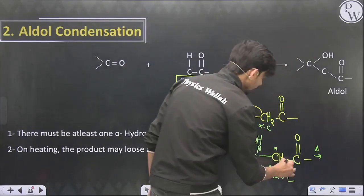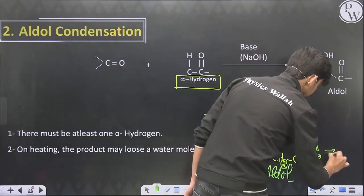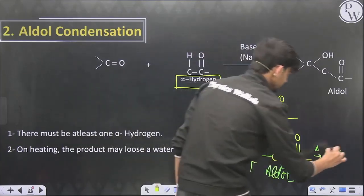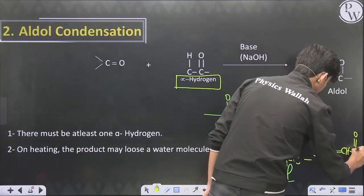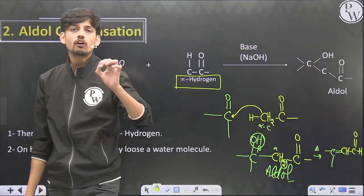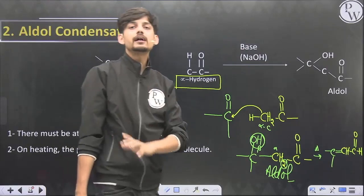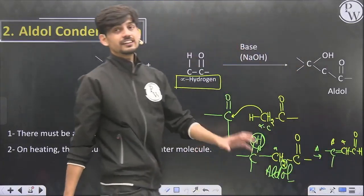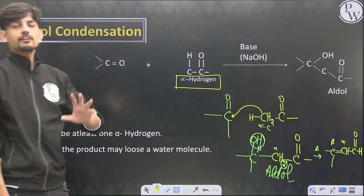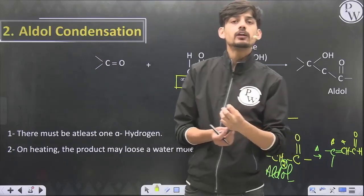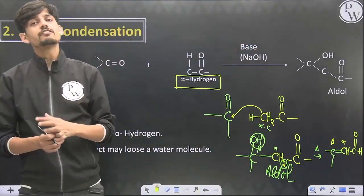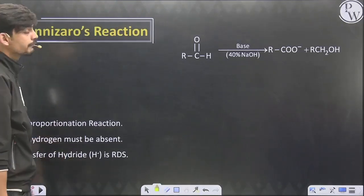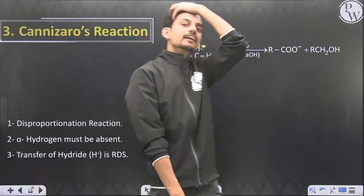The aldol product is formed by the attack of the alpha carbon of one molecule onto the functional group carbon of another molecule. If this aldol is heated, it can lose one more water molecule and form an alpha,beta-unsaturated carbonyl compound. Always remember, the new bonds will be formed between the alpha and beta positions of the product. If we use the same molecule it is intramolecular (self) aldol condensation; if different molecules are used, it is cross aldol condensation.